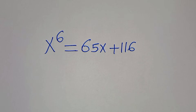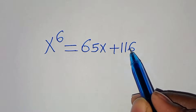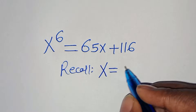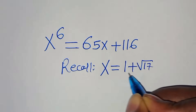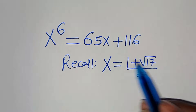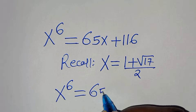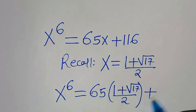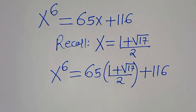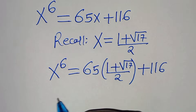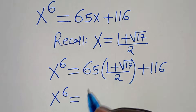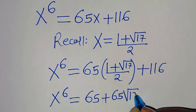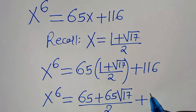Now recall that x equals (1 plus root 17) divided by 2. Let's substitute this, so x to the power of 6 equals 65 multiplied by (1 plus square root of 17) over 2, plus 116. Opening the parentheses: 65 times 1 is 65, plus 65 times square root of 17, that is 65 root 17, everything divided by 2, then plus 116.